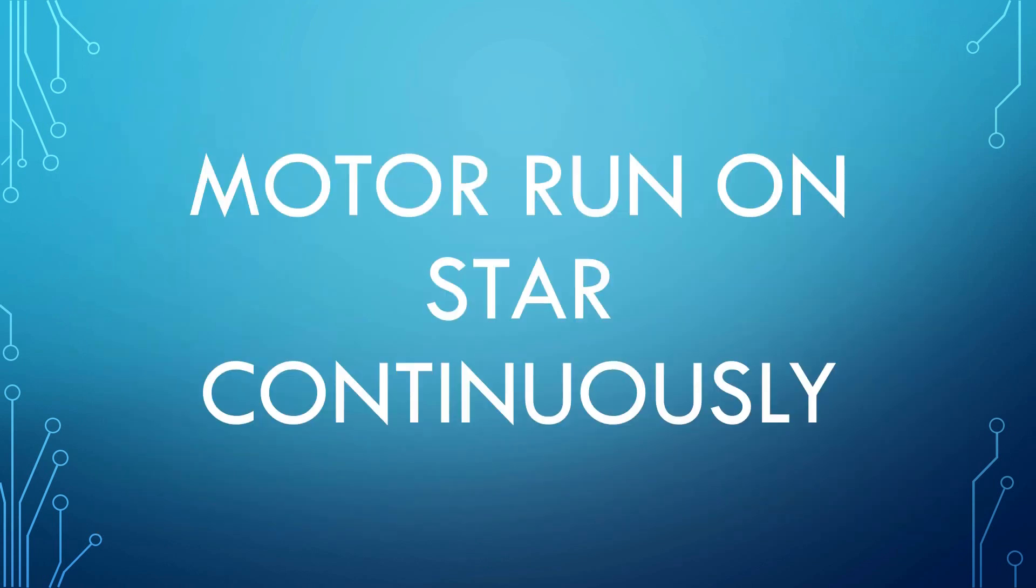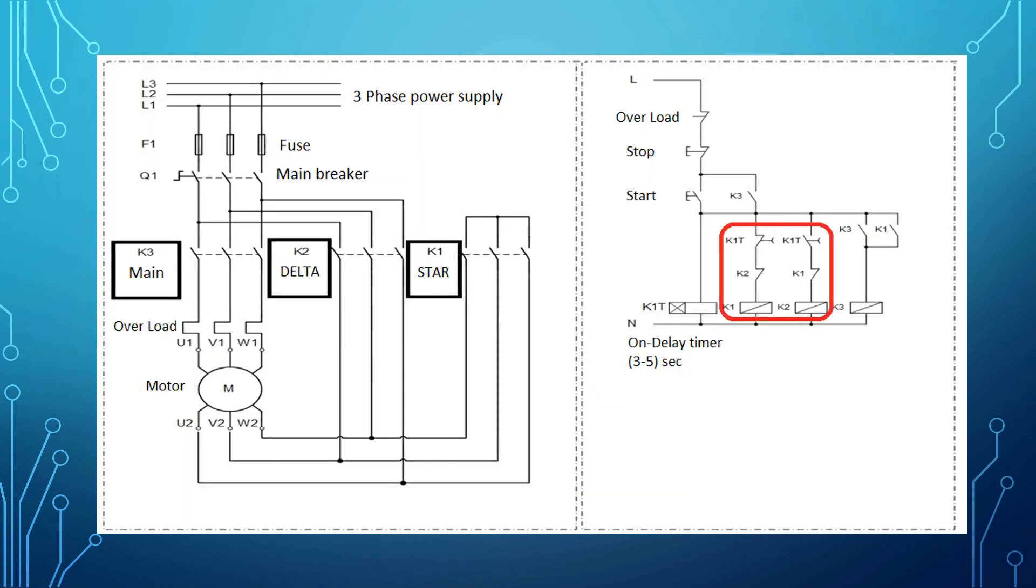Motor Run on Star Continuously. If the motor is running in star connection without transferring to delta connection, then the main check should be done to the timer which is responsible for that transfer.